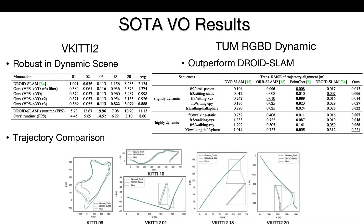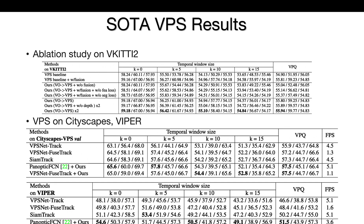Experiments on KITTI II, KITTI, and TUM RGBD dynamic sequences show that the panoptic information can better reduce the interference of dynamic objects on pose estimation and maintain high accuracy. Our recurrent iterative optimization can further improve the results. Experiments on KITTI II also show the VO Enhanced VPS module is effective in improving segmentation accuracy and tracking consistency, and our method outperforms VPS methods on Cityscapes and Viper datasets.